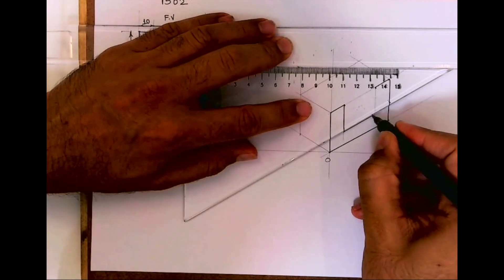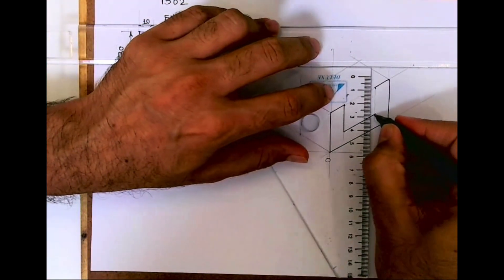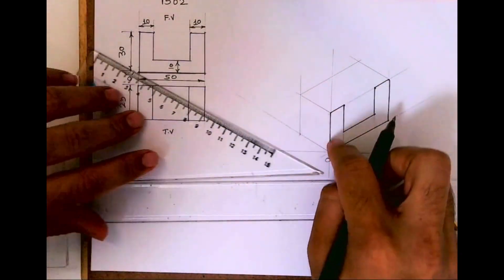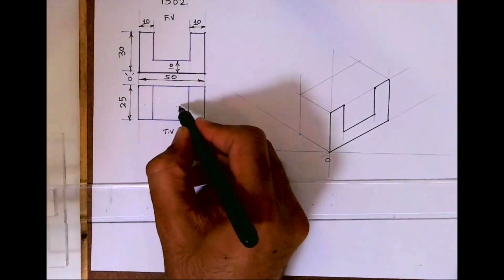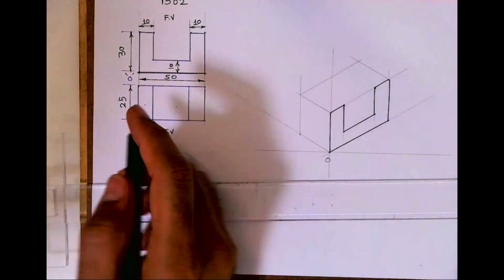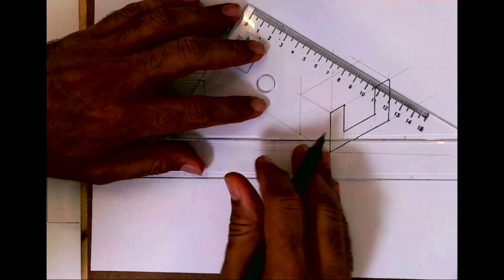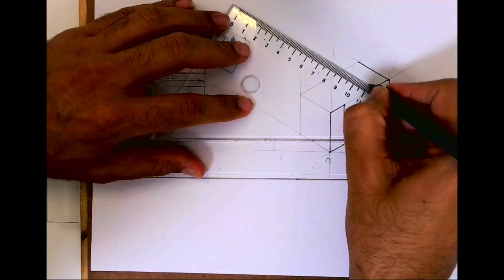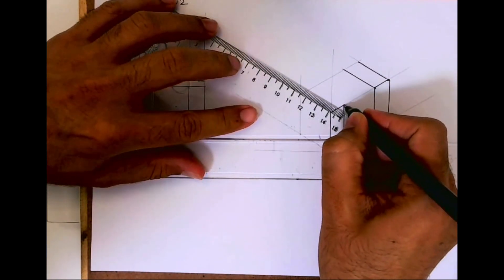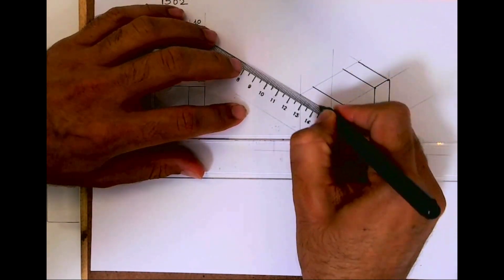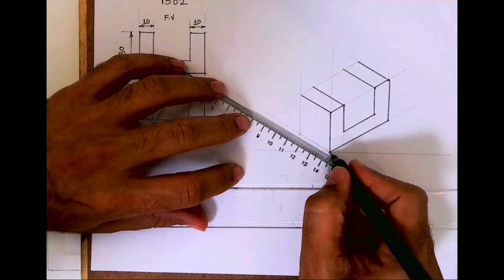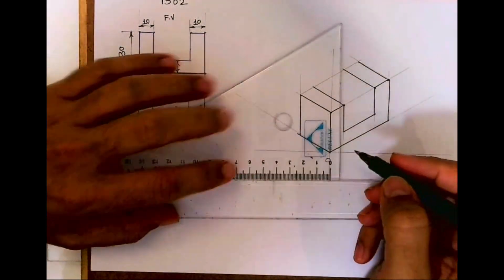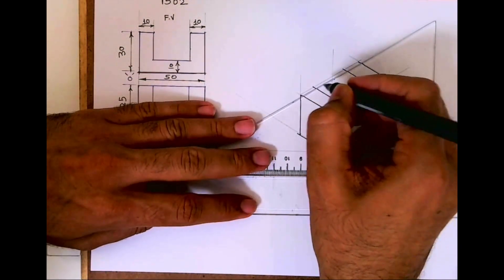And from here you draw line again, you draw vertical line, so you'll get this part. Now whatever is there in the front, the same thing is behind. How much behind? If you see, 25 behind. So we'll take all these lines behind by 25, then we'll draw vertical line and again this line.